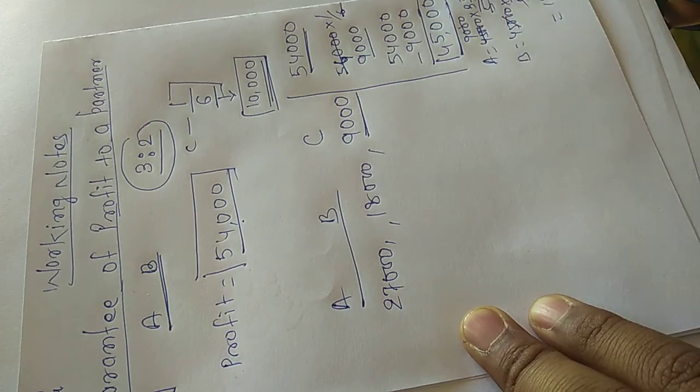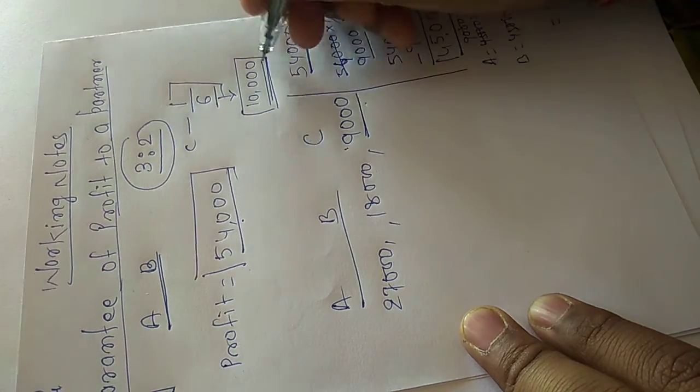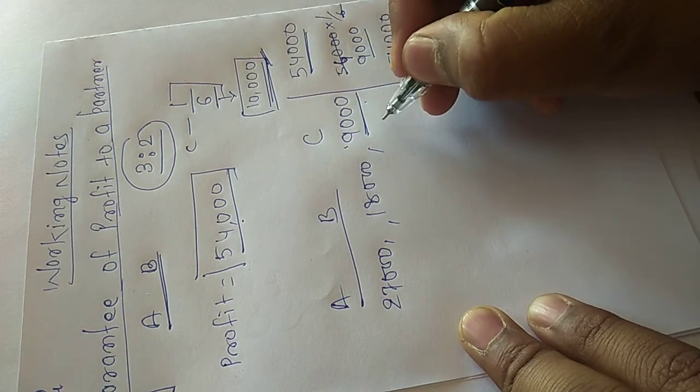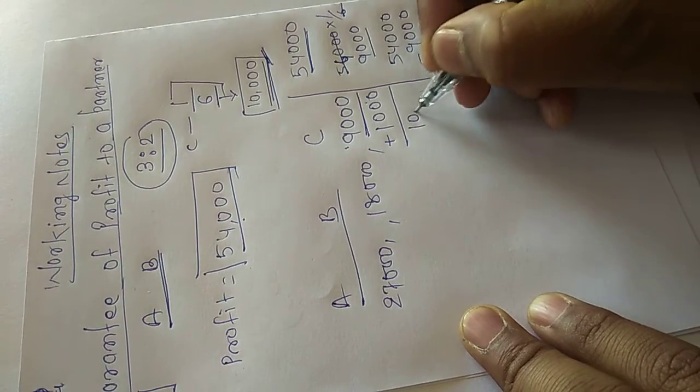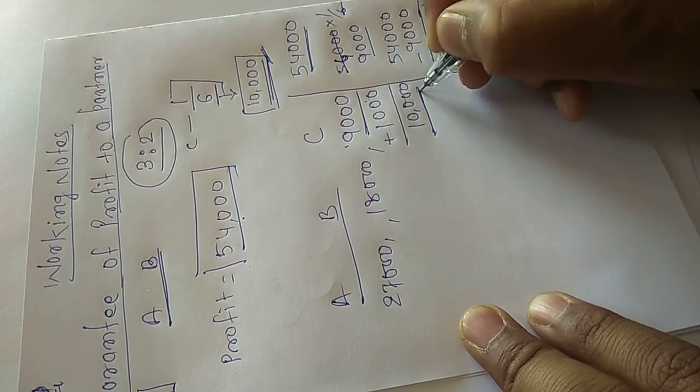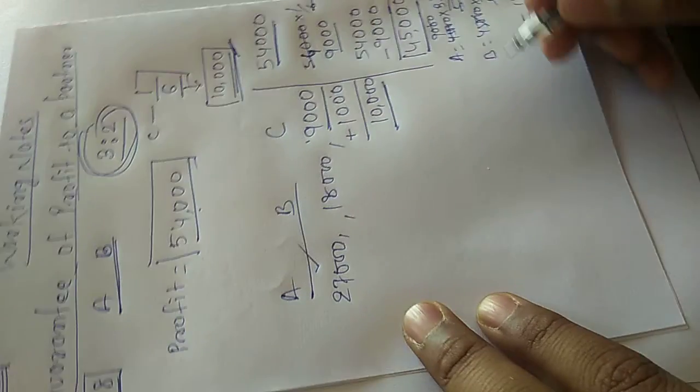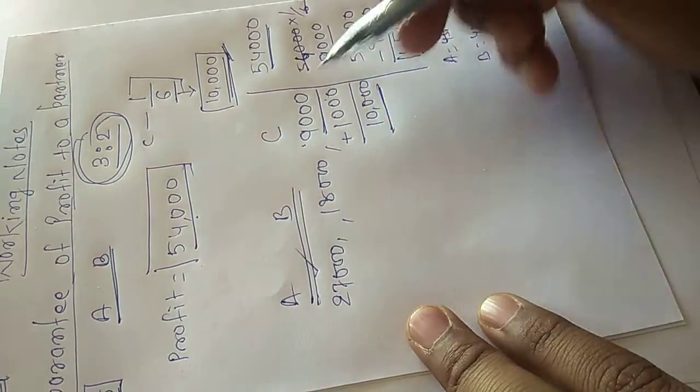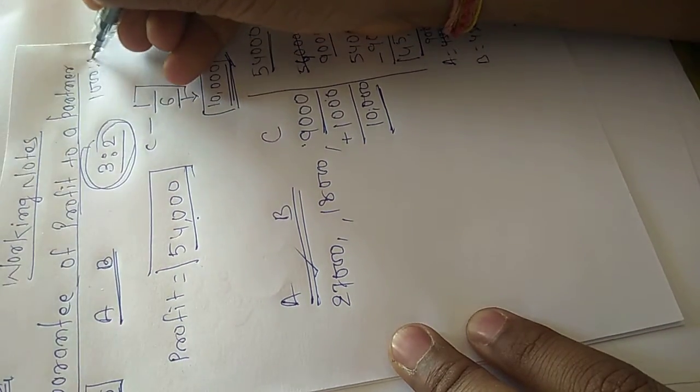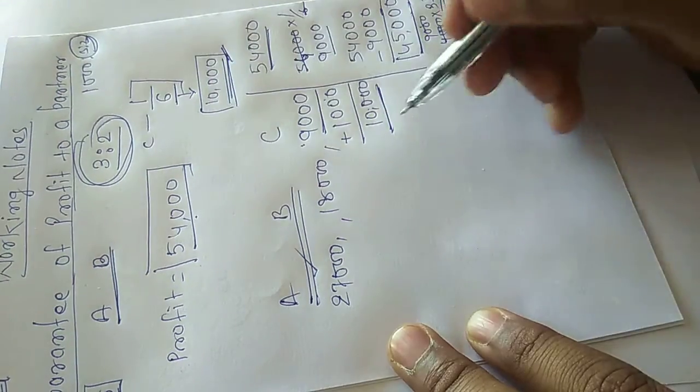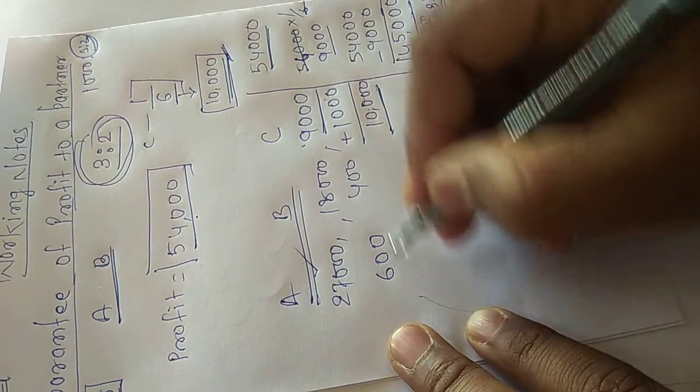But see here, amount of profit of C is less than their guaranteed amount. So their deficiency amount is 1,000. This 1,000 given by A and B in the ratio of 3 is to 2. So A share is equal to 600 and B share is equal to 400.